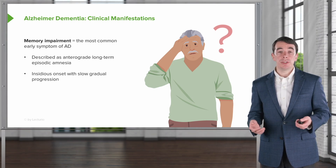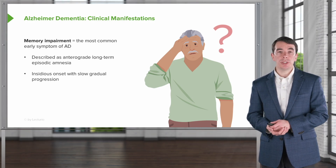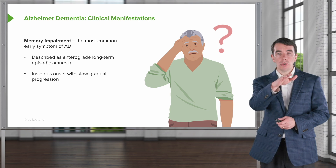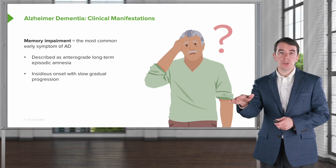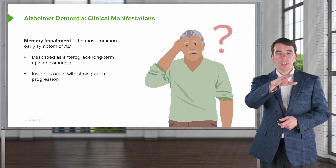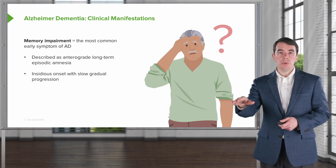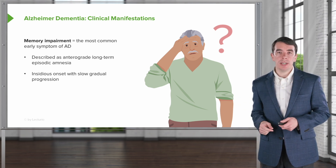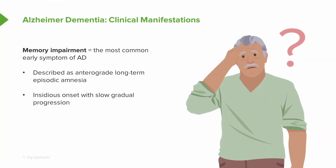It is insidious in its onset with slow, gradual progression. It's a degenerative disease, so we see slow, gradual progression over time. Rapid onset or episodes of more severe memory loss should prompt and warrant evaluation for alternative etiologies.